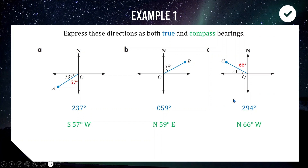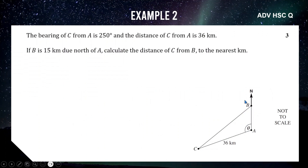Now let's look at how we can apply bearings to trigonometry using HSC questions from both Standard 2 and the Advanced course. Starting with an Advanced question: the bearing of C from A is 250 degrees and the distance AC is 36 km. B is 15 km north of A. We need to calculate the distance from C to B. From point A, pointing north and rotating 250 degrees clockwise gets us looking towards C — so the red clockwise angle is 250 degrees.